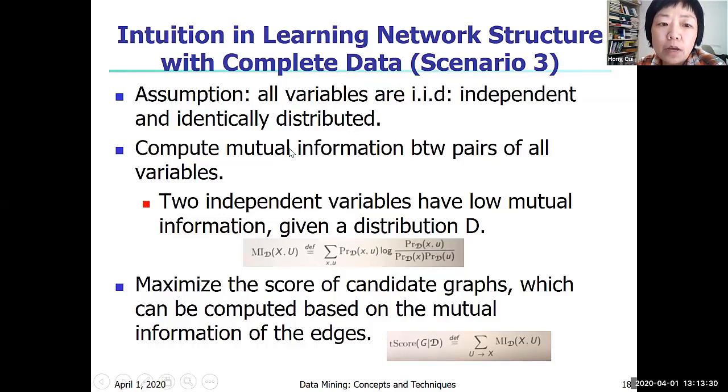The idea - we have an assumption here. When you solve any challenging question, you always need some assumptions to simplify your problem. So we assume all variables are independently and identically distributed. Their distribution is the same, all the variables are the same. Then we can compute mutual information between pairs of all the variables. This mutual information formula is given here. You don't actually need to memorize that. The idea is, if these two variables are independent, then their mutual information under this distribution is going to be very low.